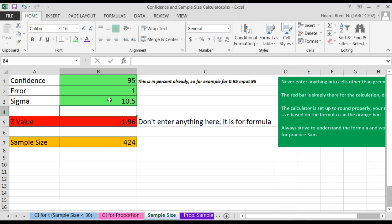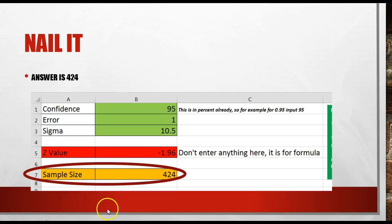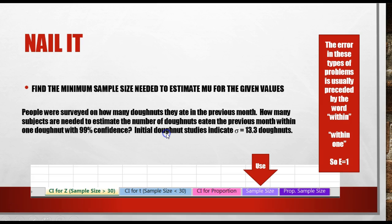The sample size is 424. We nailed it. So, 424 is the sample size I need, based on a confidence of 95%, error of 1, and a population standard deviation, or sigma, of 10.5. Let's look at another one.